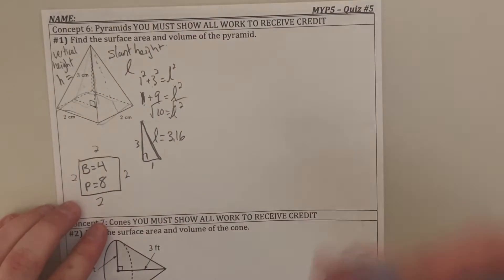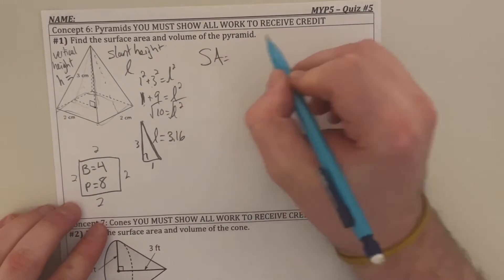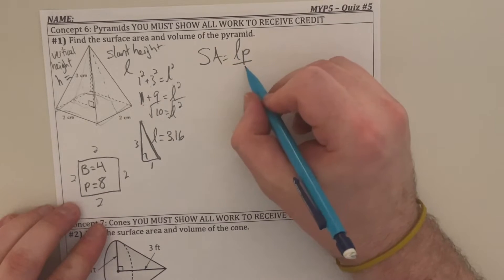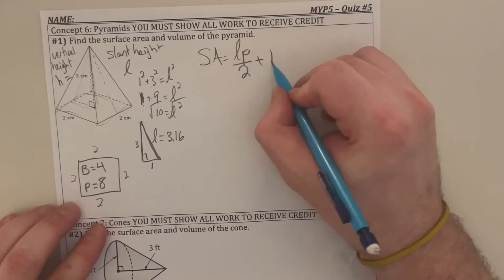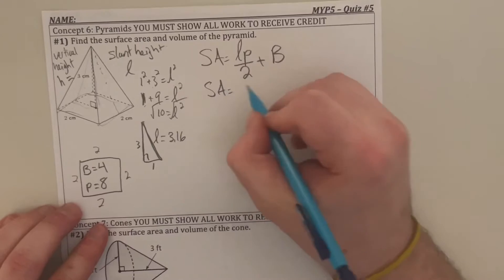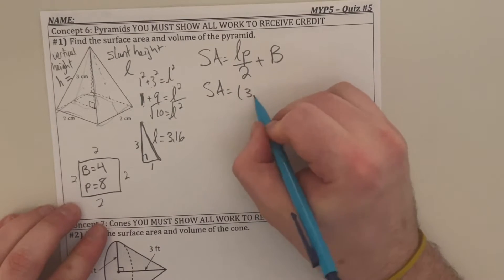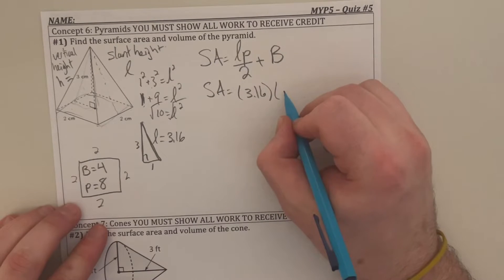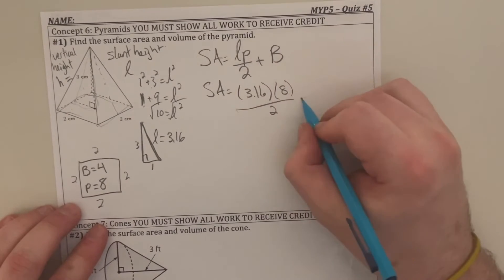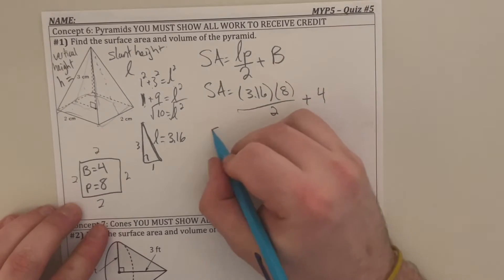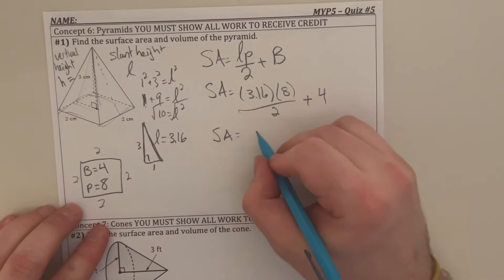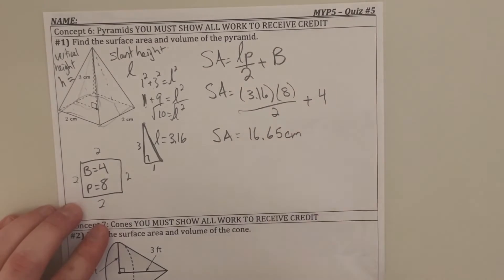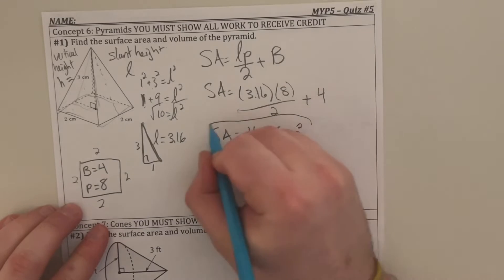Once I have my labels, I can now use my formula. The surface area of this pyramid is going to be the slant height L times the perimeter of the base P, divided by two, plus the area of the base big B. Substituting in values: L is 3.16, perimeter of the base is eight, divided by two, plus the area of the base which is four. I should end up with a grand total of about 16.65 centimeters squared.